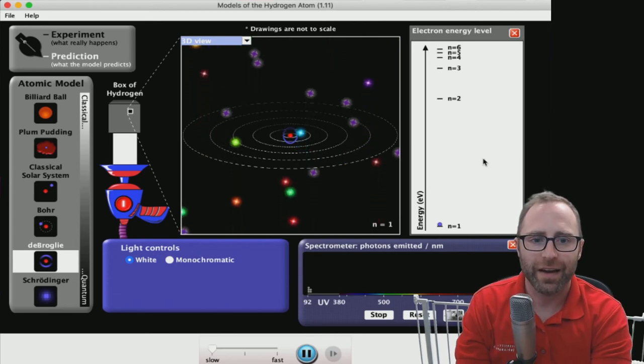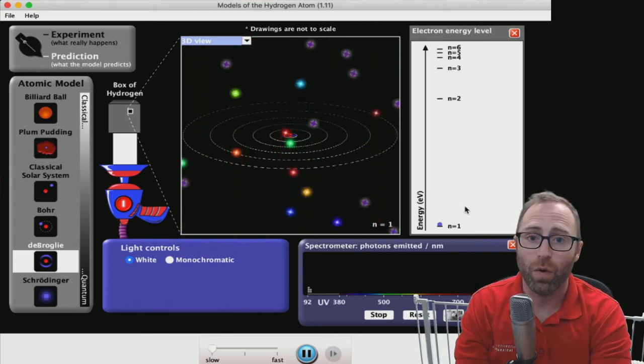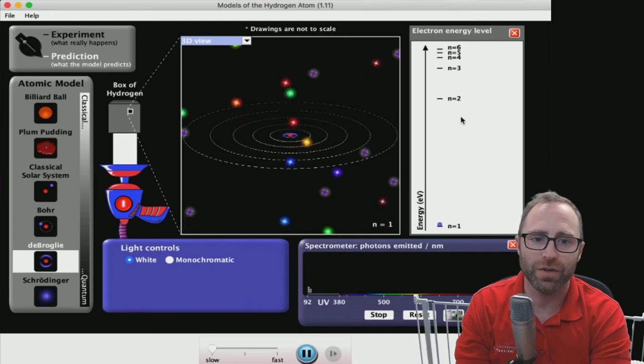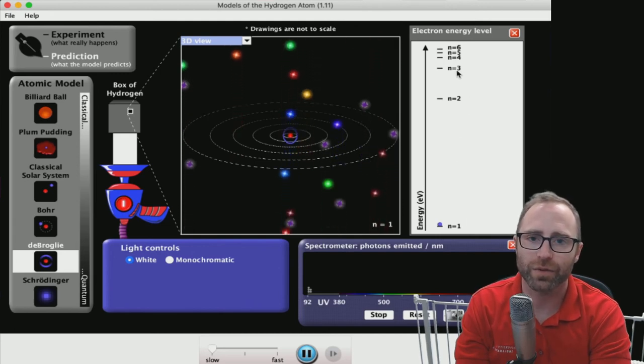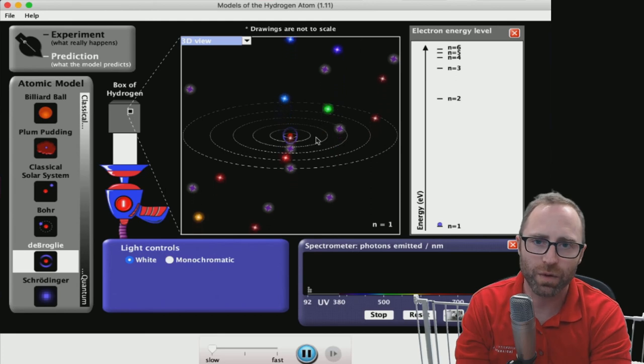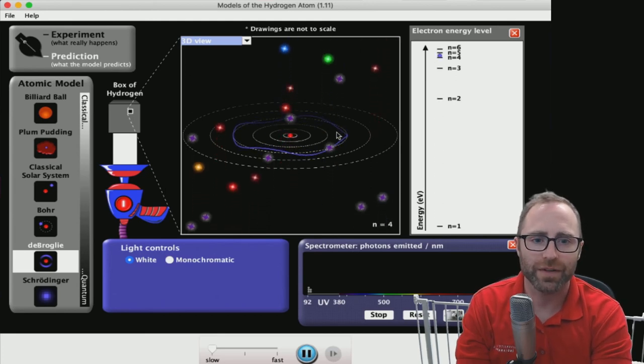And we can say now n equals 1 is going to be 1 wave. N equals 2 would be 2 waves. N equals 3, 3 waves. So on, so forth. Oh, there we go. There's a nice big one.